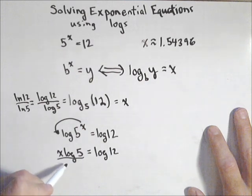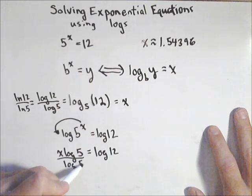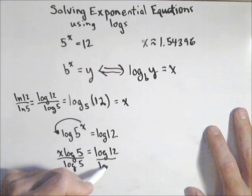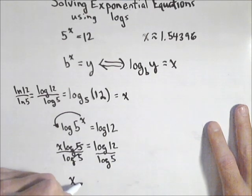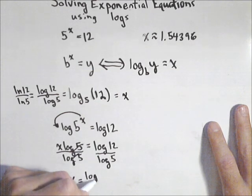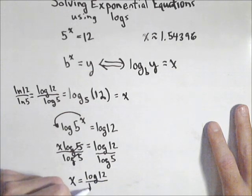And the last thing I have to do to solve for x, divide both sides by log(5). So those cancel. And I get x equals, again, the exact answer, log(12) / log(5).